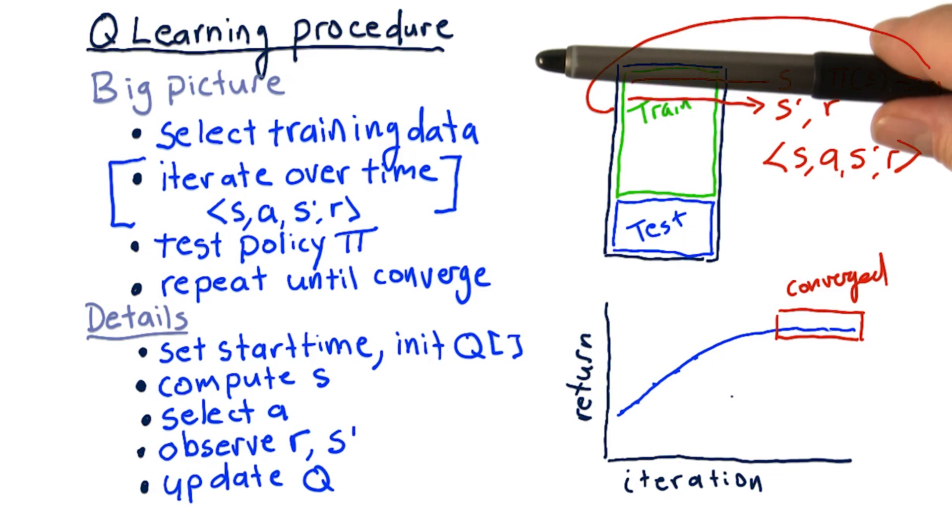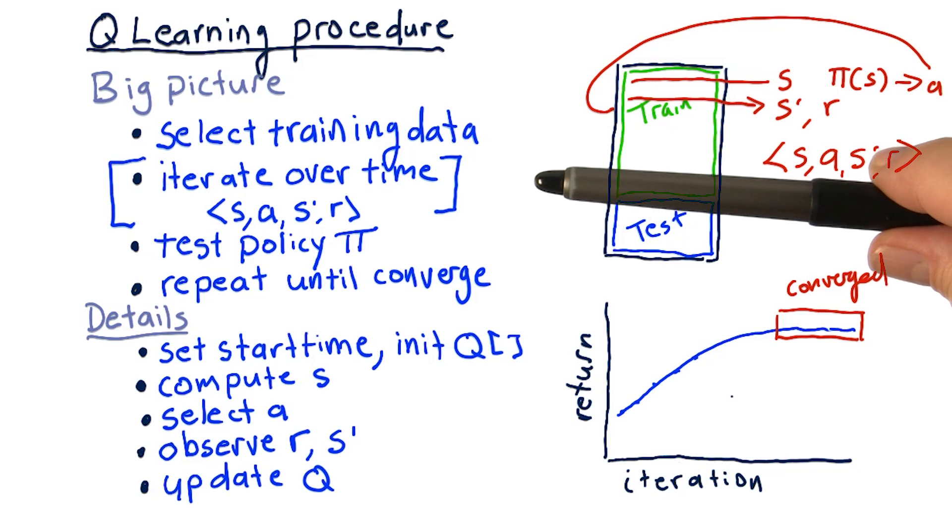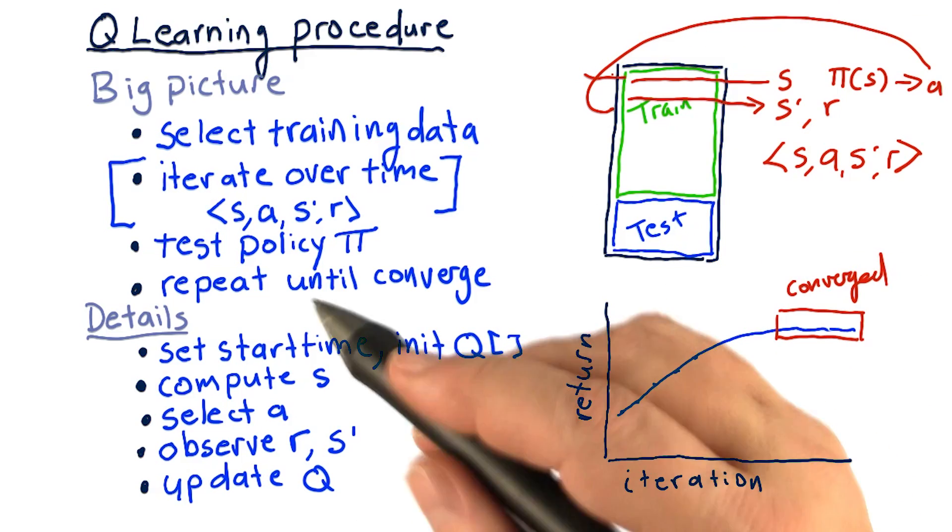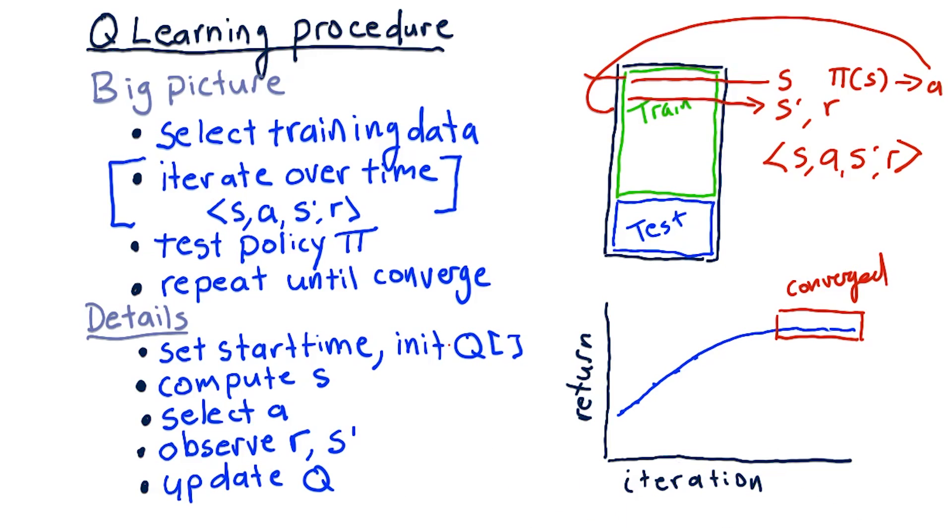So here are the details as we iterate over our training data. We start by setting our start time, which is right here at the beginning. And we initialize our Q table. The usual way to initialize a Q table is with small random numbers. But variations of that are fine.